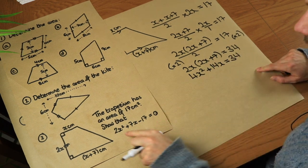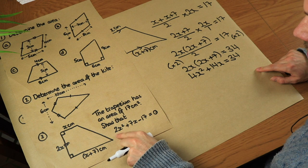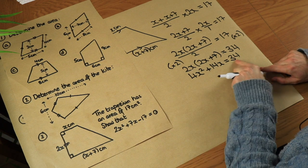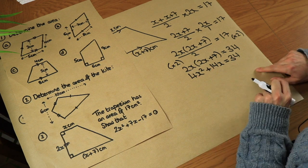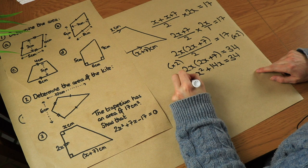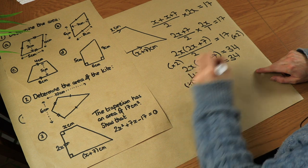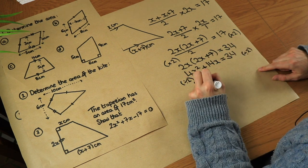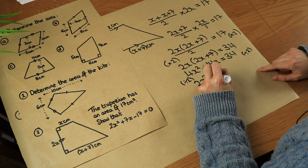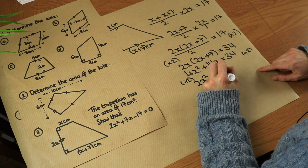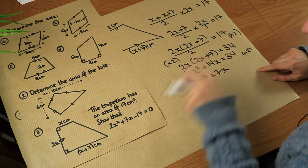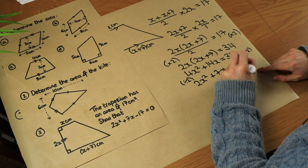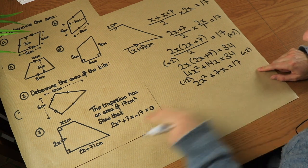Now we've got 4x squared — notice that all terms have a factor of 2. So we divide both sides of the equation by 2, giving 2x squared plus 7x. This is looking promising — it's looking close to the target equation. Equals 17.